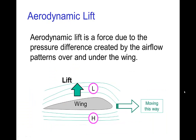Yet another example, which we'll look at in more detail in another tutorial, is aerodynamic lift. In this case, the air flow around a wing is different on the top of the wing compared to the bottom of the wing. This results in a pressure difference. We'll look more carefully at how that pressure difference arises in another tutorial, but given that there's a pressure difference, we have a net force — and that's the aerodynamic lift.